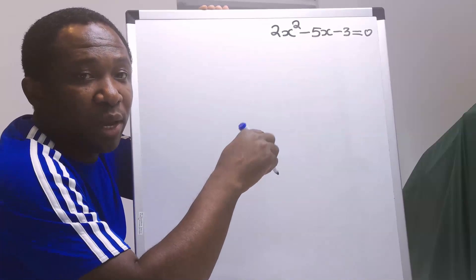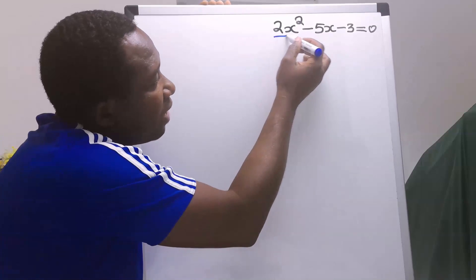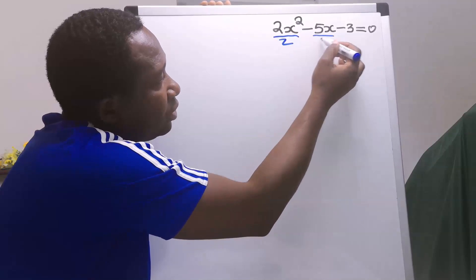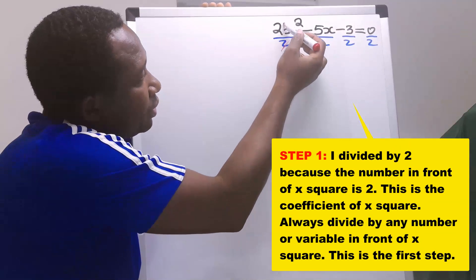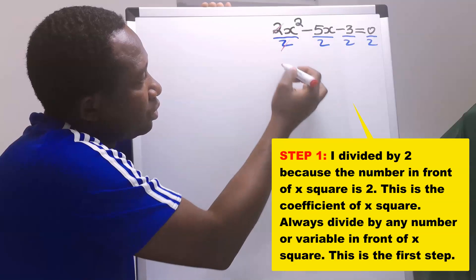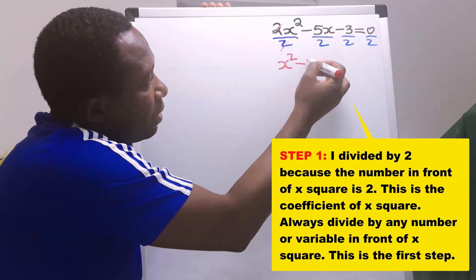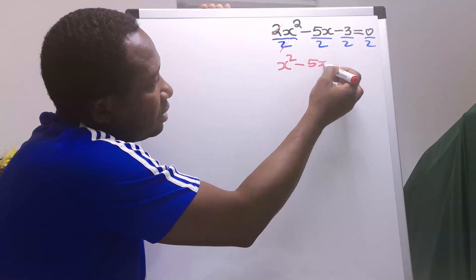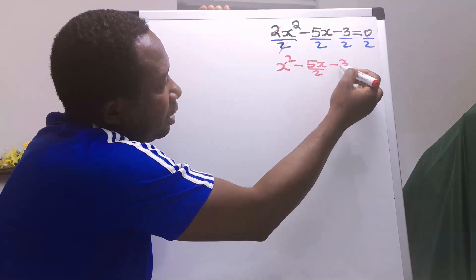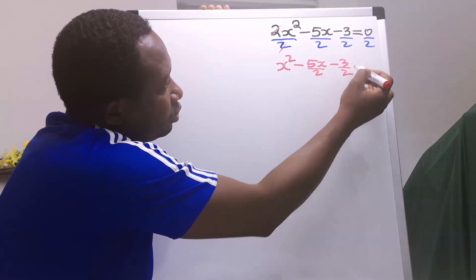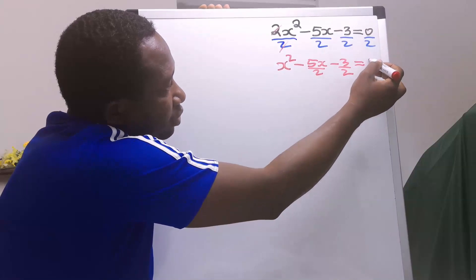To complete the square, we are going to divide all through by 2. Next, 2 will take away 2, and we are now left with x squared minus 5x over 2 minus 3 over 2. 0 divided by 2 is 0.